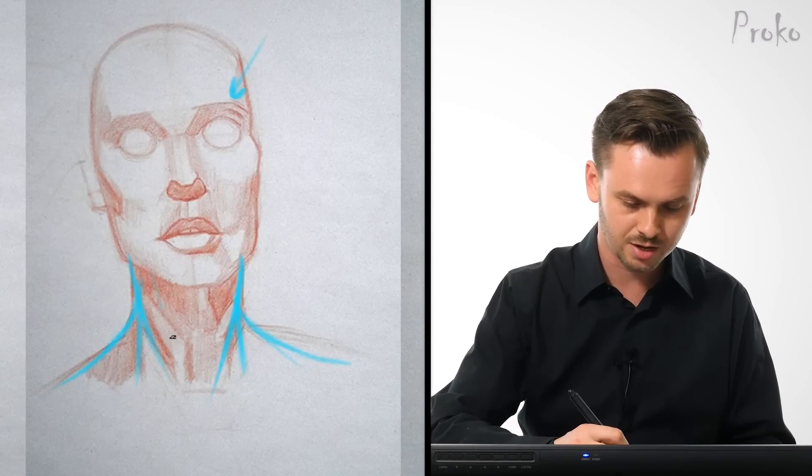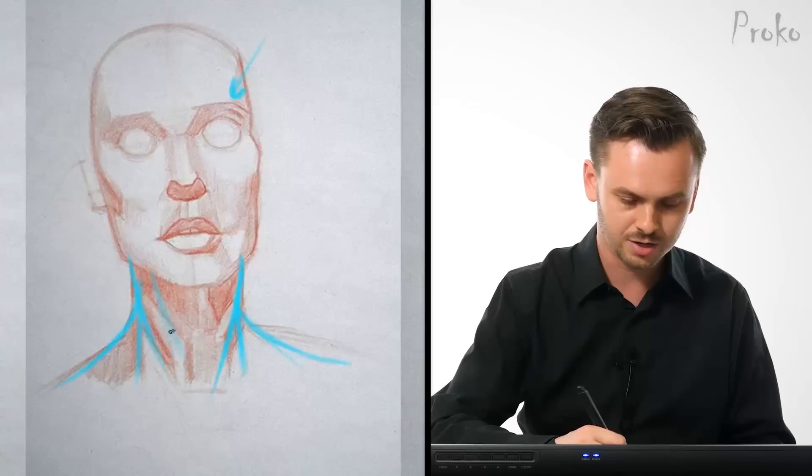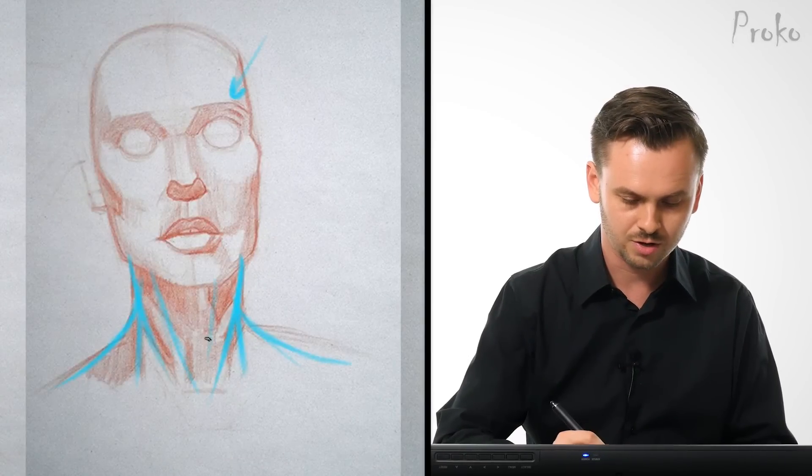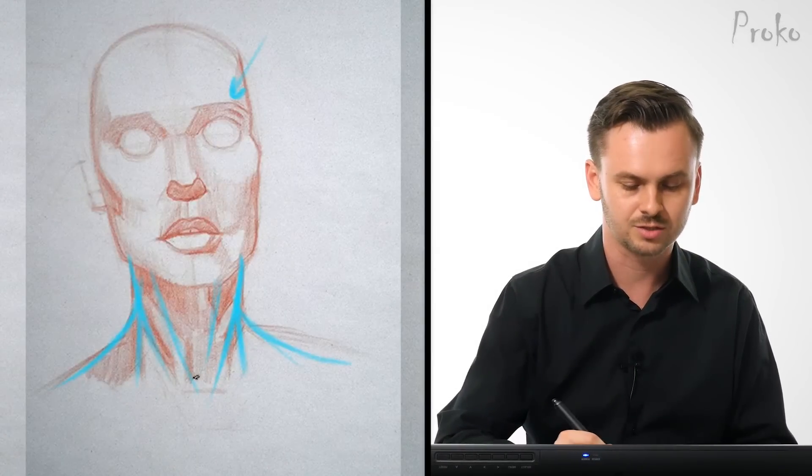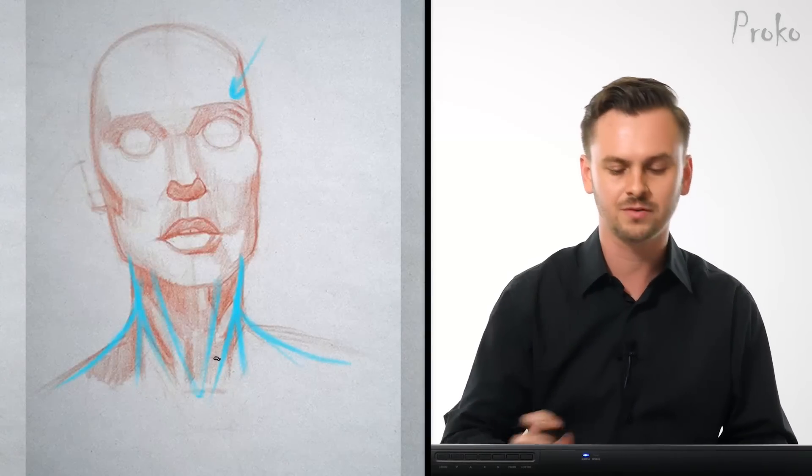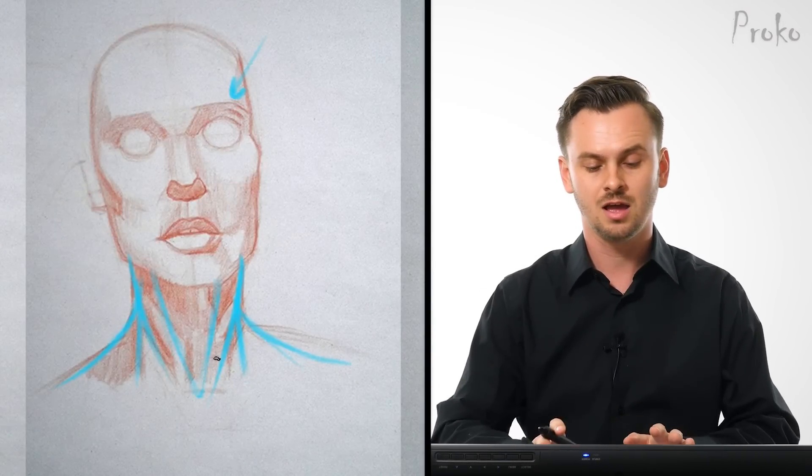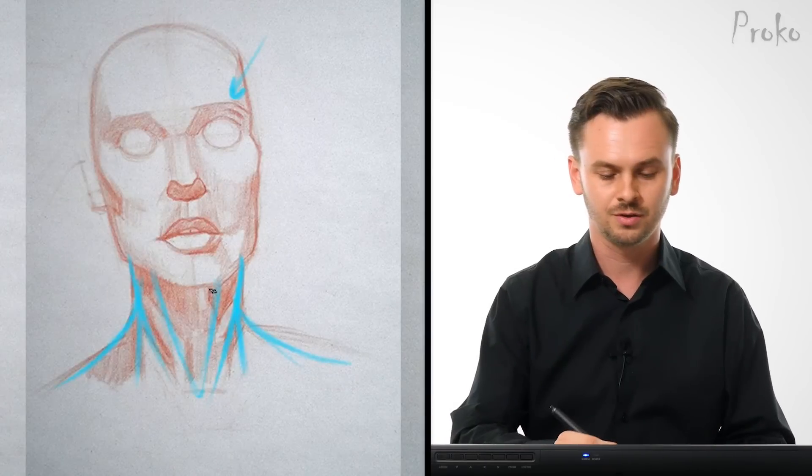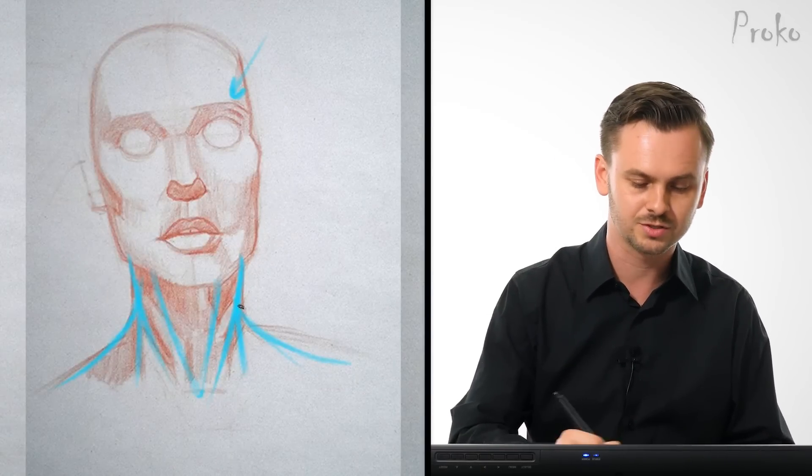So I would say this whole area in here would have to be sternomastoid, and I wouldn't indicate it really strong in there as if they're flexing because as soon as you start adding a lot of detail into the neck, it starts to age the neck, it starts to make it more masculine. So I'm mapping in all the shapes, but if I was to start shading all of this, I would definitely keep it subtle.